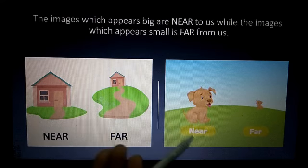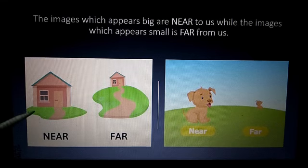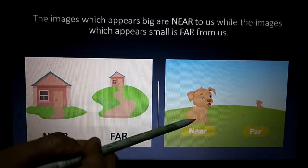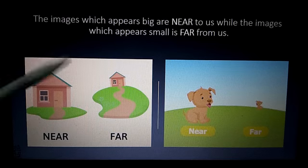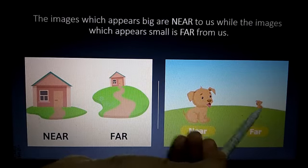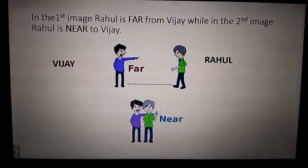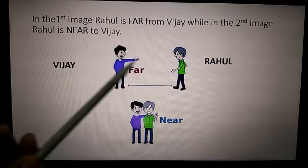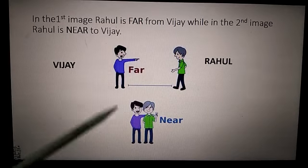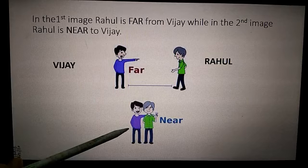Now look at these two images. The images which appear big are near — like this house and this puppy are near to us — while the images which appear small are far from us, like this puppy and this house. In the first image Rahul is far from Vijaya while in the second image Rahul is near to Vijaya.